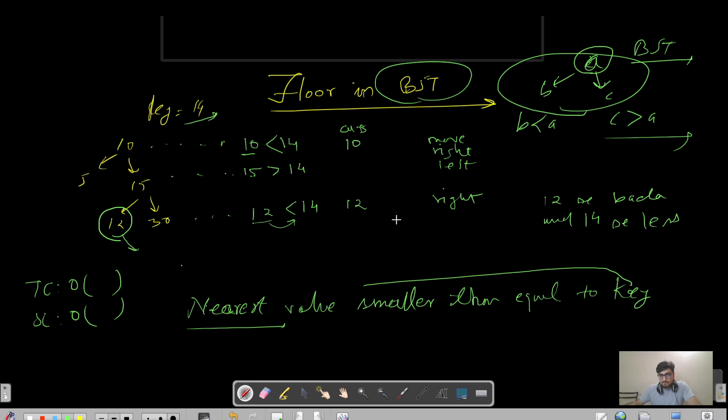So let's talk about the key points. Whenever we are moving, we have this inequality: if root.data is less than key, then definitely we have to move in right direction and we need to store it in our answer as well.